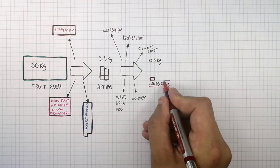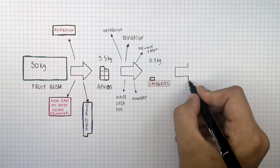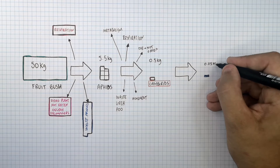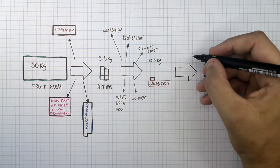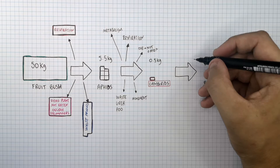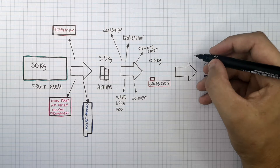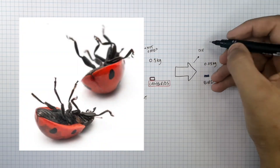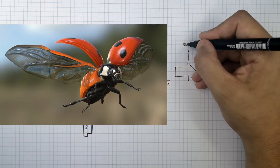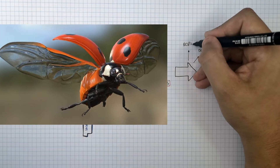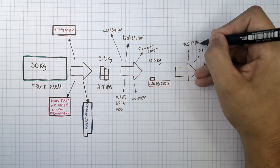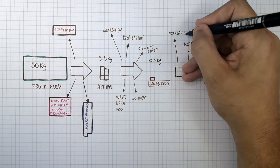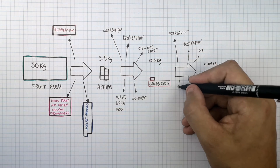There are 0.5 kilograms of biomass stored in the ladybirds, of which 0.05 kilograms is transferred to the next trophic level — birds. Not all the energy stored in the ladybirds' biomass is transferred to the birds because some ladybirds die without being eaten. Ladybirds move, so they undergo cellular respiration, which transfers energy from their biomass to the surroundings via heating. Ladybirds also undergo metabolic processes, so energy is used for that instead of being transferred to the next trophic level.